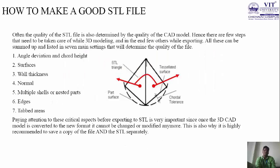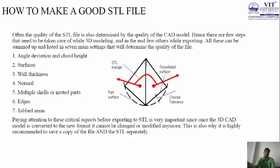So, how to make a good STL file — the parameters of a good STL file are many. These are the basic 7 parameters: angle deviation and chord height, surfaces, wall thickness, normals, multiple shells or nested parts, edges, and tabbed areas. These are the main 7 parameters to be considered to create a good STL file. In this diagram it is clearly shown the STL triangle — STL is nothing but tessellated triangles where the triangles are joined in a particular manner. This is the tessellated surface shown under chord tolerance.